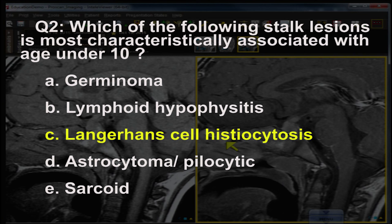Astrocytomas of the pilocytic variety could involve the stalk, especially in NF1, but this would not be characteristic of either the tumor or NF1. Sarcoid is seen in adults — sometimes young adults — but not under age 10.